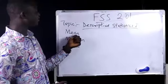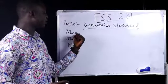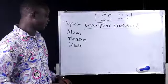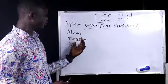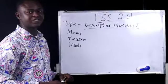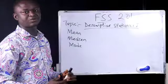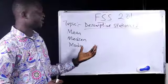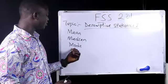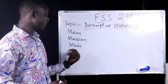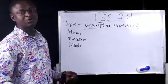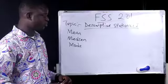The mean refers to the average value of a group of data. While the median refers to the value in the middle of a group of data when the data is arranged either in ascending or descending order. When we talk about the mode, the mode refers to the value that has the highest number of occurrence in the group of data.